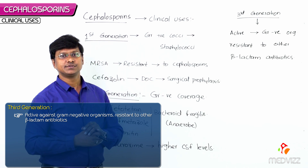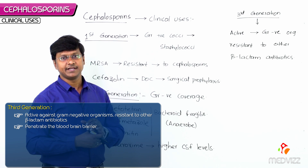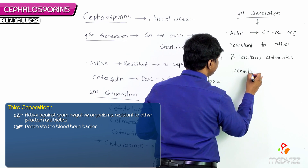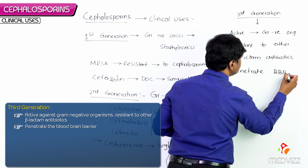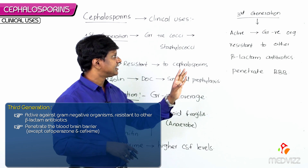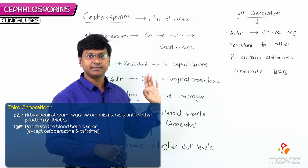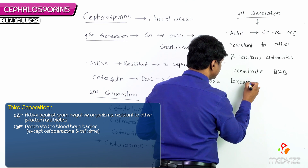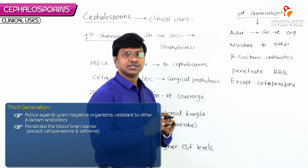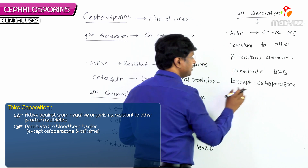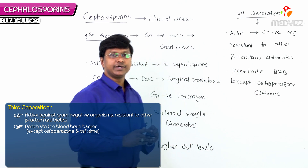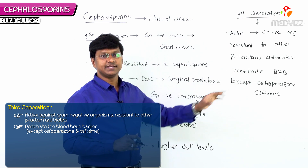Third generation cephalosporins can also penetrate the blood-brain barrier. However, there are exceptions — cefoperazone and cefixime do not penetrate the blood-brain barrier. All other third generation cephalosporins can penetrate it.